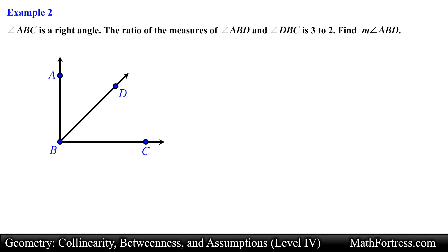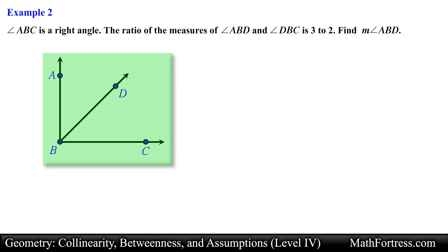Angle ABC is a right angle. The ratio of the measures of angle ABD and angle DBC is 3 to 2. Find the measure of angle ABD. In this problem we are provided with a diagram of a right angle that is formed by two smaller angles. We are given a ratio between the two smaller angles and are asked to determine the measurement of angle ABD.